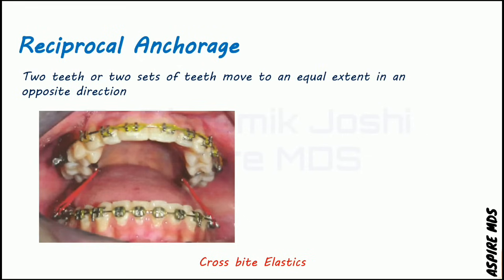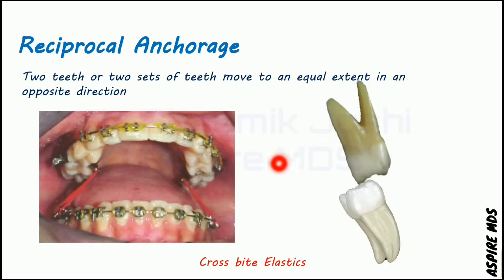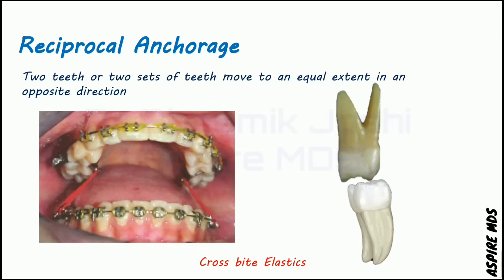Another example of reciprocal anchorage is crossbite elastics. Normally the maxillary molar is buccal to the mandibular molar, but in crossbite cases, a crossbite elastic is applied to the palatal side of the maxillary molar and the buccal side of the mandibular molar. This elastic causes equal and opposite direction forces on both teeth, ultimately bringing them to their normal positions. This is reciprocal anchorage.